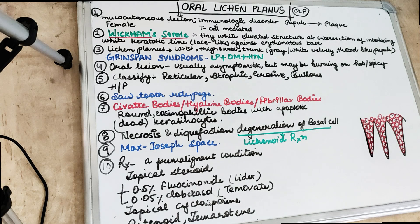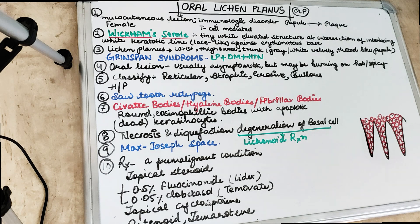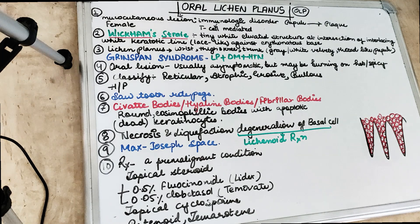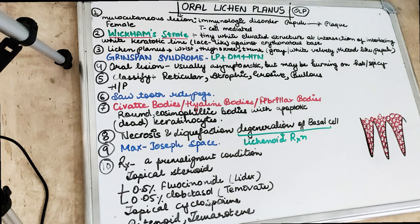Welcome back to another 10 in 10 series, where we cover each topic under 10 headings in 10 minutes. Today's topic is oral lichen planus, which is a pre-malignant condition as well as a mucocutaneous lesion.